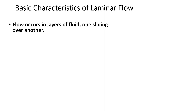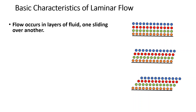The basic characteristics of laminar flow are that the flow occurs in layers of fluid particles. One fluid layer moves over another layer, as shown by the different colors of particles. As we move away from a solid boundary, the velocity increases.